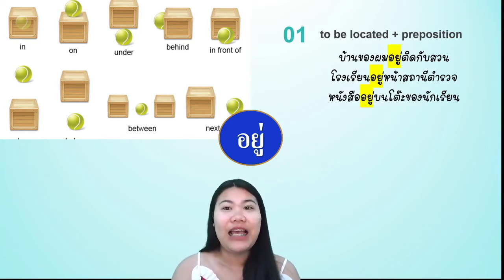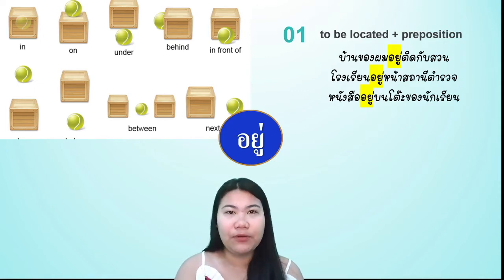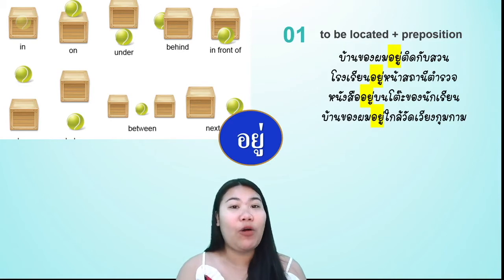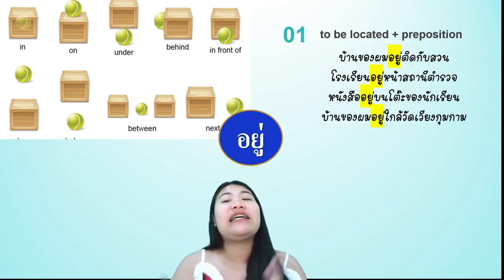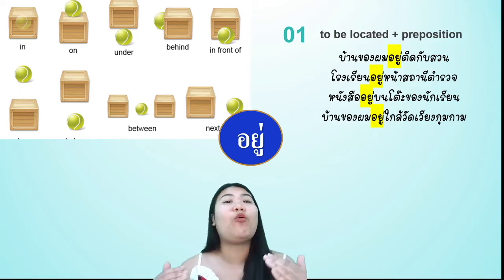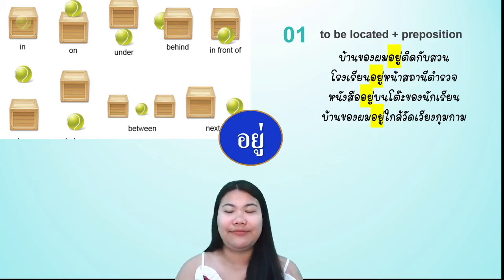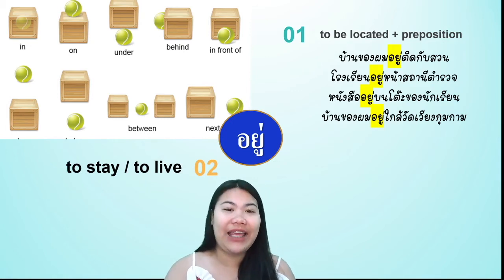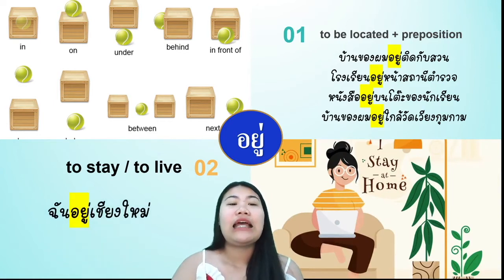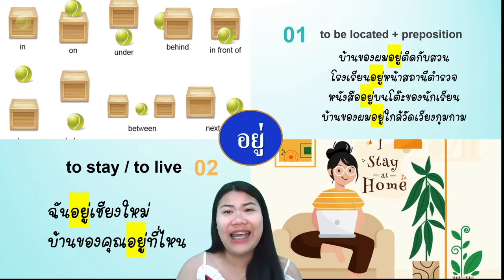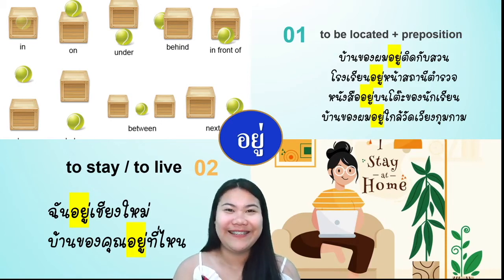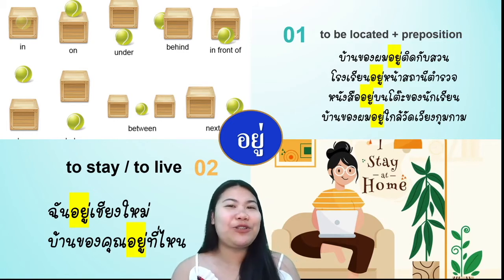หนังสืออยู่บนโต๊ะของนักเรียน — and the word บน means 'on.' The book is on the student's table. And then: บ้านของผมอยู่ใกล้วัดเวียงกุมกาม — and the word ใกล้ means 'near.' My house is near Wat Wiang Kum Kam temple. Also: ฉันอยู่เชียงใหม่ — I live in Chiang Mai. บ้านของคุณอยู่ที่ไหน — Where is your home? This is about how to use the word อยู่.